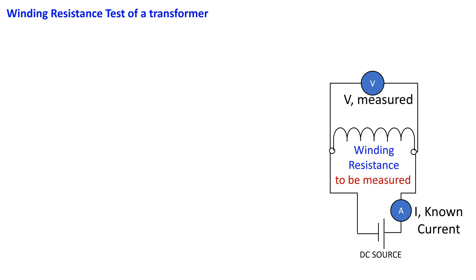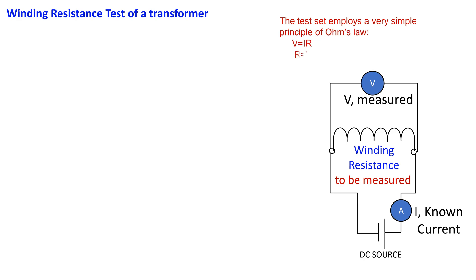The test is carried out by passing a known current through the winding and measuring the voltage drop across it. The measured voltage and known current are then used to calculate the resistance of the winding, which should be within the expected range for the transformer to function optimally. The test set applies the simple principle of Ohm's law: V = IR, that is R = V/I, where R is resistance, I is current, and V is voltage.